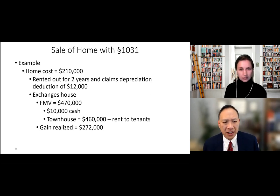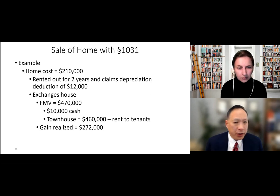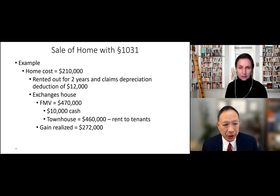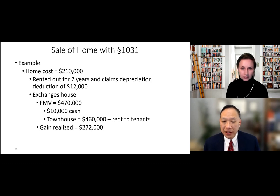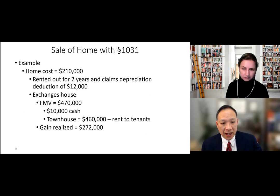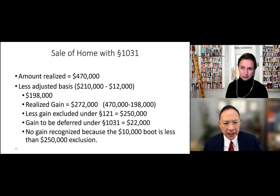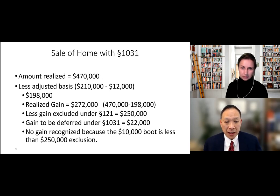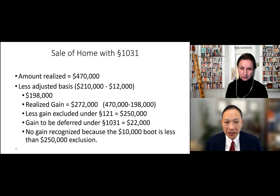Another example: house costs $210,000, rent it for two years, claim $12,000 depreciation, exchange into a new place for $470,000, keep $10,000 cash, buy new place for $460,000. The realized gain is $272,000. With the $250,000 single exclusion, you defer the remaining $22,000. In this example there's no tax due by combining Section 1031 and Section 121.